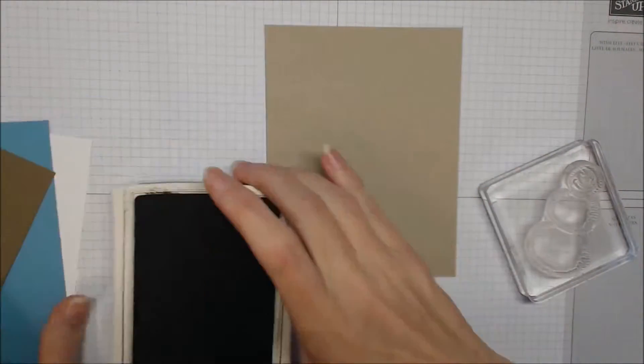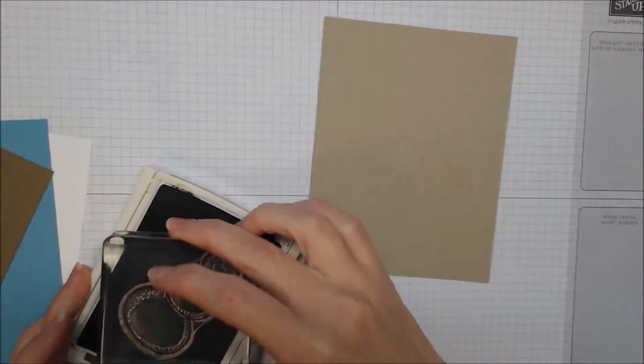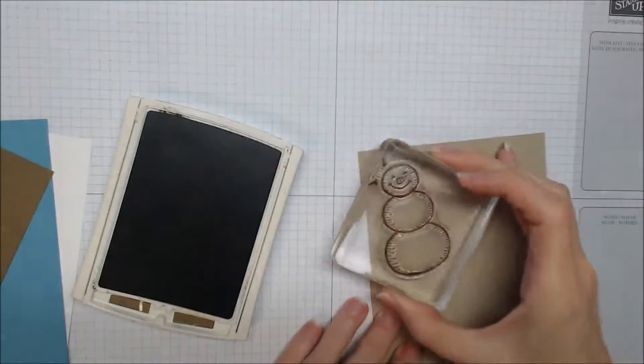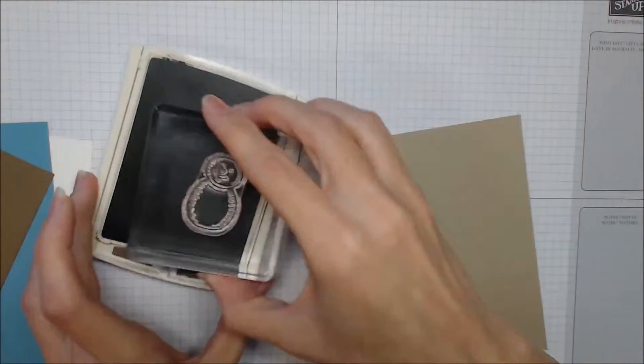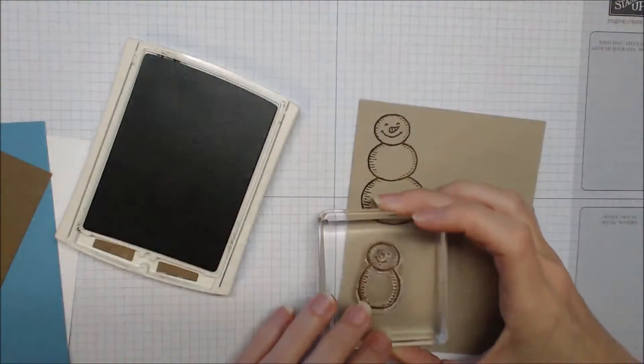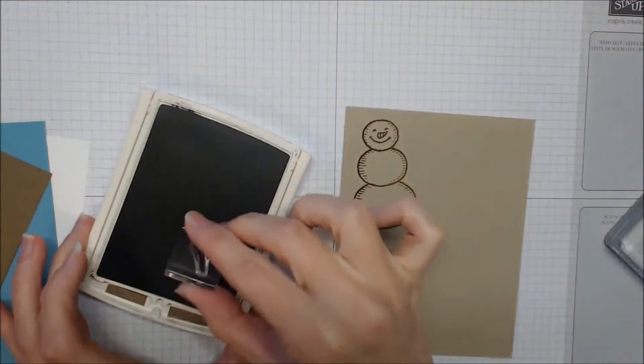So we're going to stamp our images onto Crumb Cake using Soft Suede Ink. When you stamp your images, keep enough space between them so that you can use the dies to cut them out with. We have the large snowman and the small snowman.